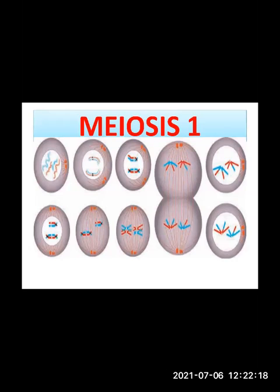We don't have to study the sub-stages of prophase 1 in great depth. Regarding meiosis 1, what happens is that recombination or crossing over occurs between homologous chromosomes, and thereafter those homologous chromosomes are divided into two groups — that is, two haploid cells are formed.